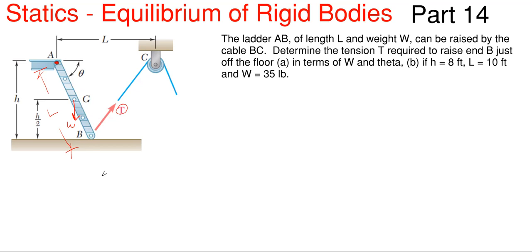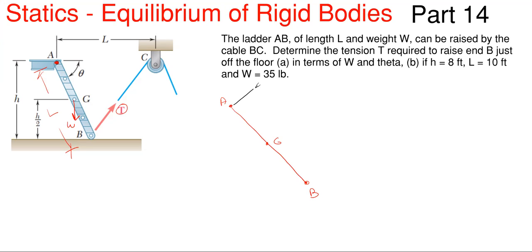Since everything is at an orientation and we don't really know a lot of angles, the best approach with this one is to orient your x and y coordinate system with this particular problem at the angle of the ladder. So what that means is that we have point A up here, point G right here, point B down here. I'm going to orient my axis such that the y is perpendicular to my ladder and my x is parallel to it.